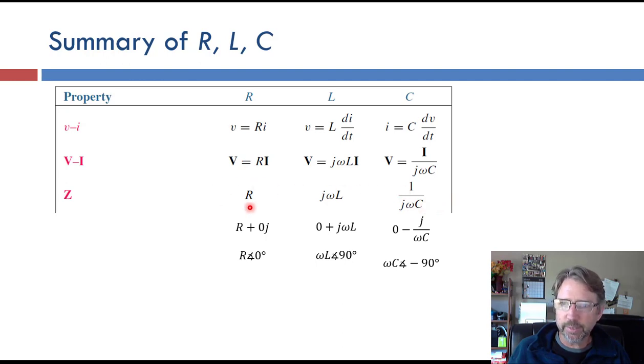These are phasor quantities, so we have two standard forms for phasors: either the rectangular form with an imaginary and a real part, or the polar form with a magnitude or amplitude and an angle. So here, R plus 0 times j, or R with a phase of 0 degrees.